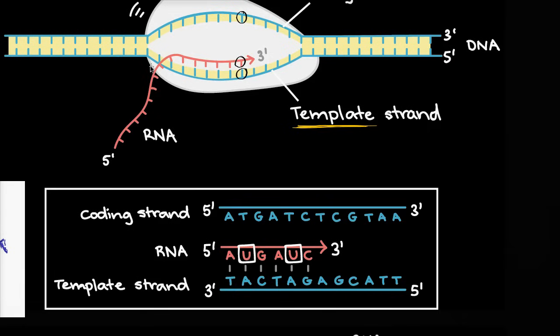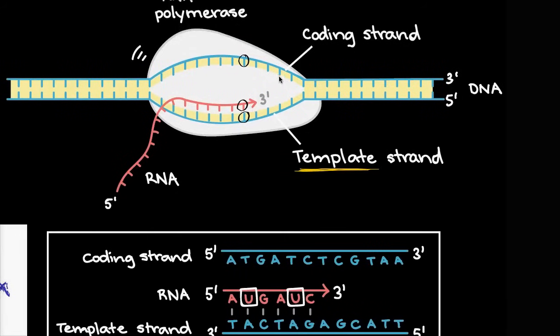So once again, this bottom strand is acting as a template, but the resulting RNA that gets coded is essentially going to have the same information that we had in the coding strand.